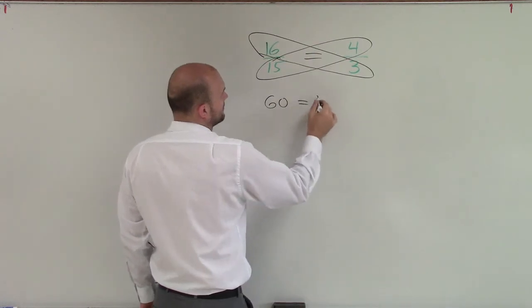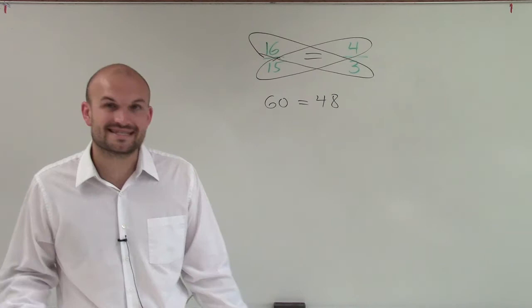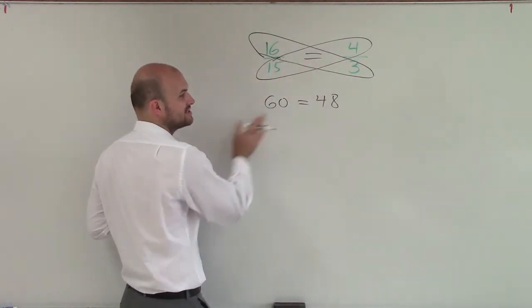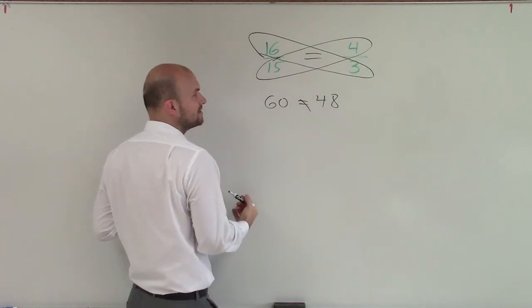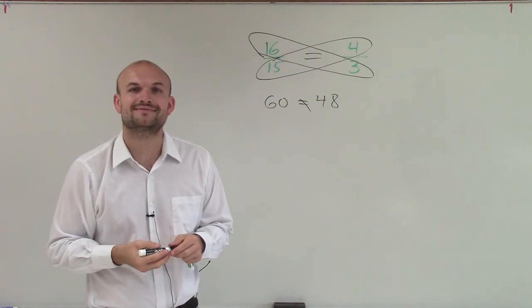Now, obviously, we know that 60 is not equal to 48. It's a little bit easier than seeing if the fractions are equivalent. So since we know that these are not equal when I apply cross multiplication, these two fractions do not form a proportion. Thanks.